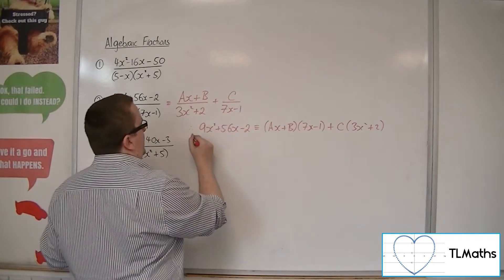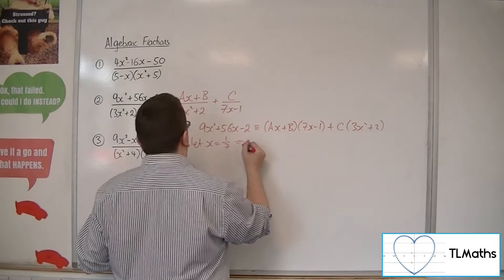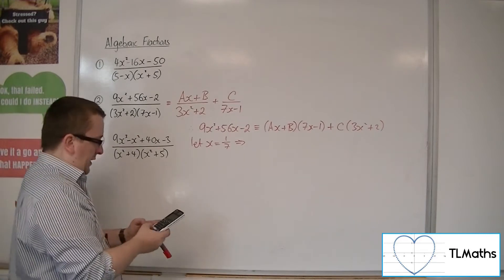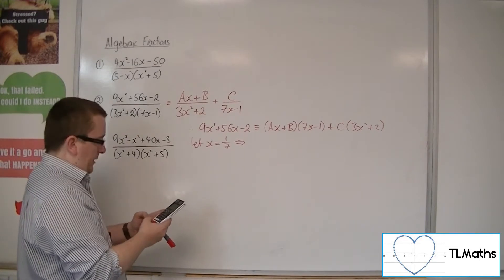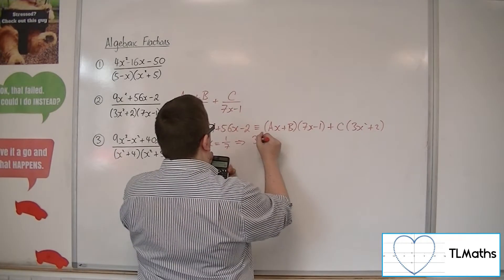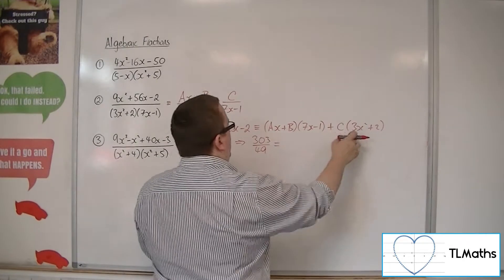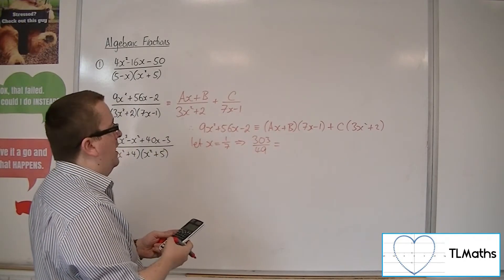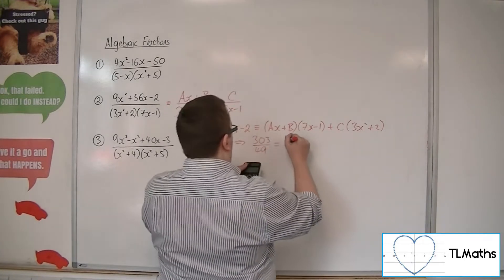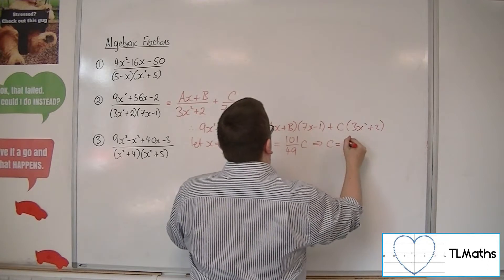Letting x equal 1/7 to eliminate that bracket, we substitute into the left-hand side: 9 times (1/7) squared plus 56 times (1/7) minus 2 gives 303 over 49. Substituting into the remaining bracket: 3 times (1/7) squared plus 2 gives 101 over 49, times c. So c must equal 3.